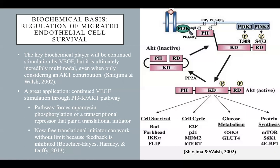A great application to expand on is continued VEGF stimulation through the PI3K-AKT pathway. Endothelial maintenance is achieved by this pathway, which increases VEGF translation as it forces mammalian target of rapamycin (mTOR) phosphorylation of the transcriptional repressor 4E-binding protein to associate the translational factor 4E. Binding frees the translational inhibition factor, enabling translation of remaining proteins — particularly VEGF — whose PDGF feedback loop is inhibited anyway, reinforcing that perpetual motion machine.